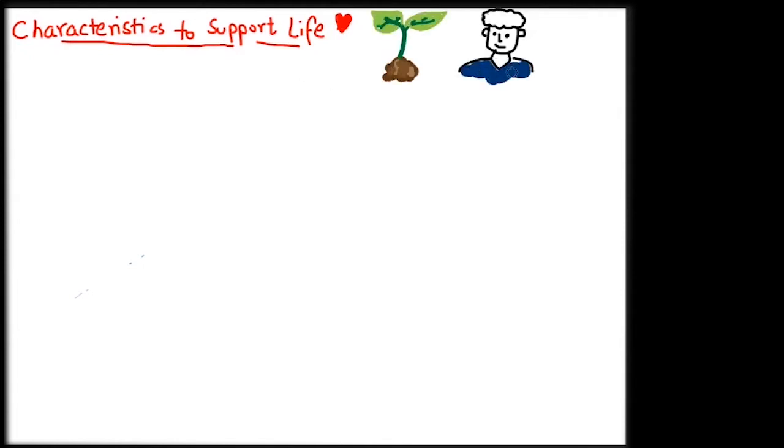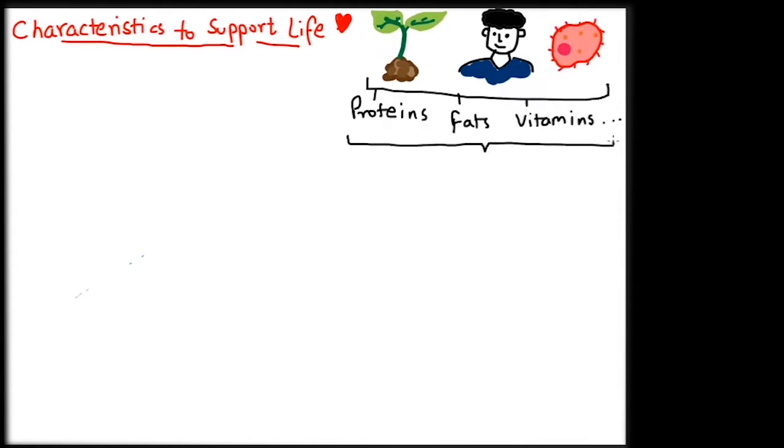To qualify as a candidate for being a possible home to life, an exoplanet has to have certain characteristics that support life. These conditions are inspired from our experience of life and life as we know. Life that is similar to ours, a carbon-based life dependent on water and oxygen.